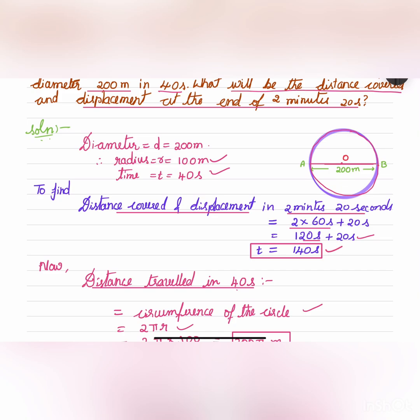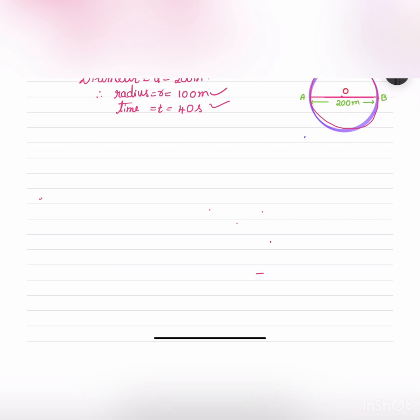So how much distance is covered by the athlete in 140 seconds and also the displacement by the athlete in 140 seconds. Let us do it. So for that we need to find out the distance covered in 1 second.